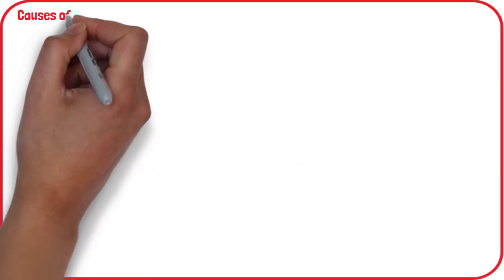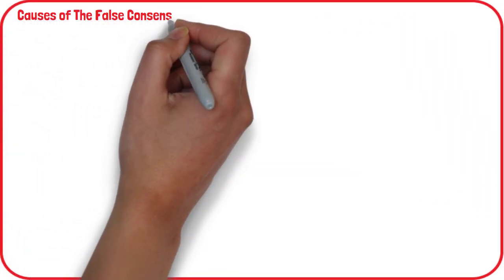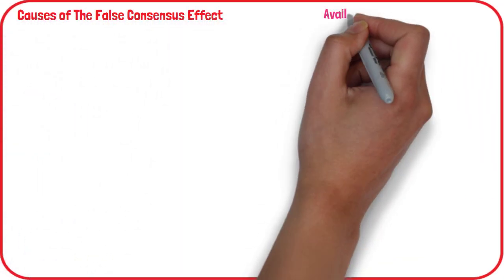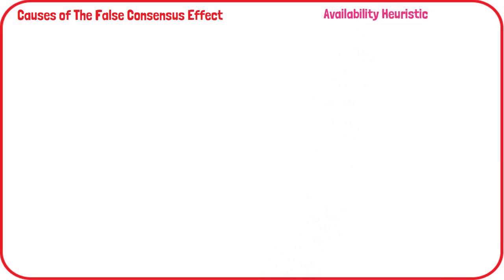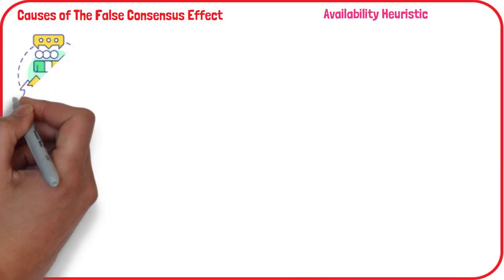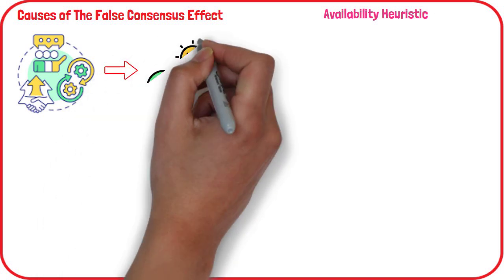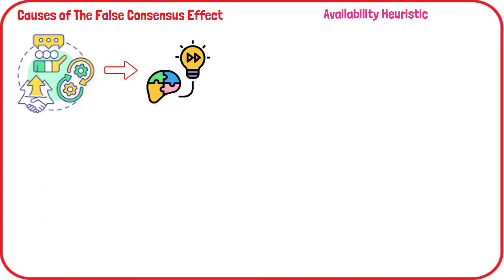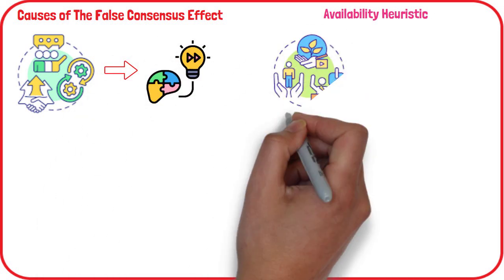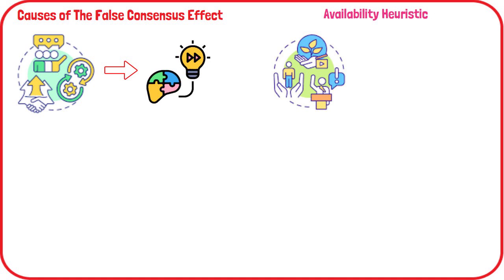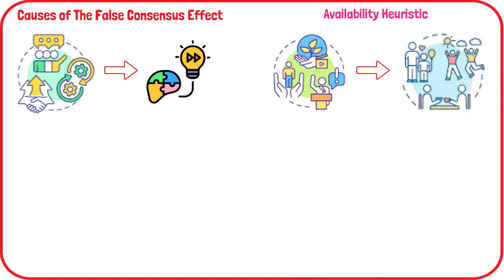One of the causes of the false consensus effect is the availability heuristic. When we are trying to estimate how common or likely something is, we tend to look at the examples that come to our mind most readily. While determining whether other people share your beliefs, you'll probably think of people who are the most similar to you, like your family and friends, and it's very likely that they do share many things in common with you.